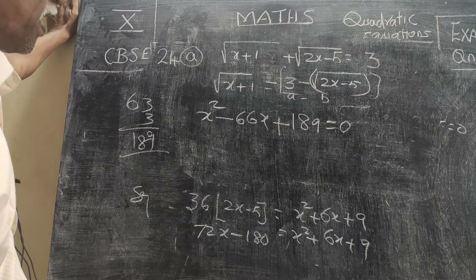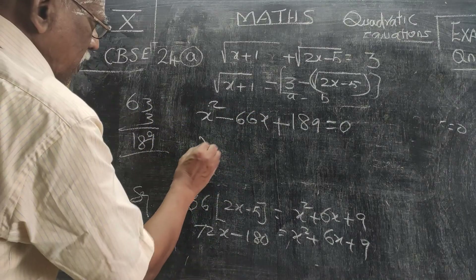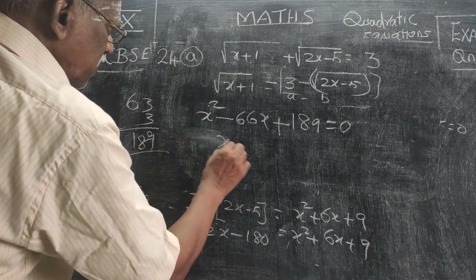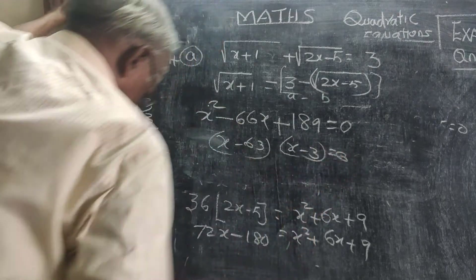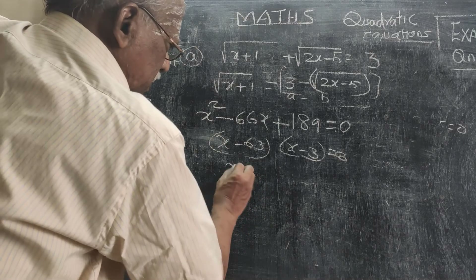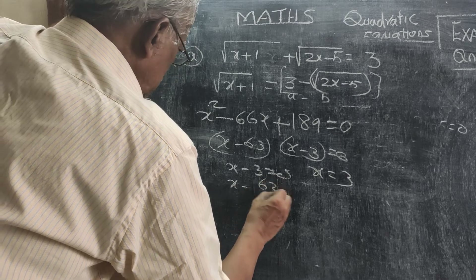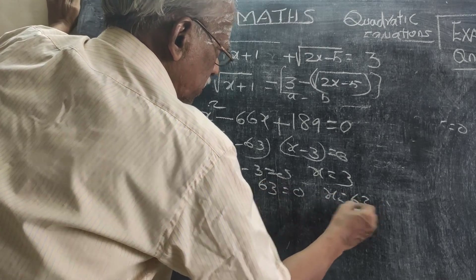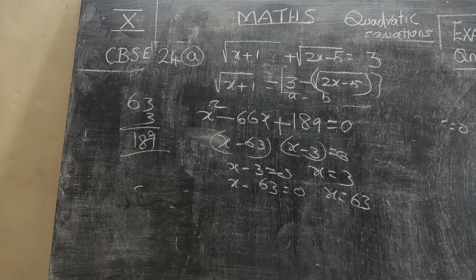Rearranging: x² plus 6x plus 9 minus 72x minus 180 = 0, so x² minus 66x minus 171 = 0. Since 63×3=189 and... factoring as (x−63)(x−3) = 0 gives x=3 or x=63. Substitute back to check whether you are getting 3 on both sides for each solution. That completes the problems.